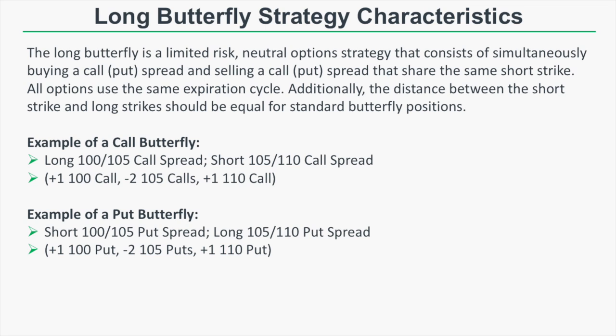In a traditional long butterfly spread, the long options and short options should be the same distance apart. An example of a call butterfly would be to buy the 100/105 call spread while simultaneously selling the 105/110 call spread. We're combining a long call spread and a short call spread that share the same short strike, and both spreads are five points wide. This leaves us with one long 100 call, two short 105 calls, and one long 110 call.